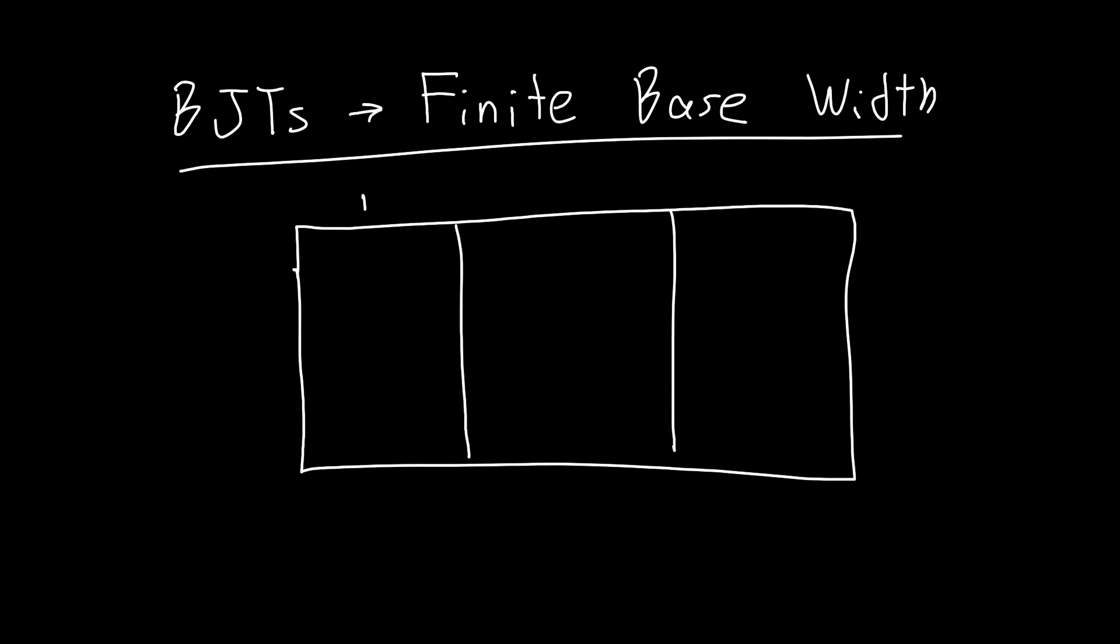If we've got this BJT, we know it's going to have some depletion regions when we initially put these junctions together. And we said, let's apply a forward bias to this junction so that it's acting like a diode, and a reverse bias to this junction so that it's acting like a bucket or a collector so that we can collect all of the holes that we inject over from this P side.